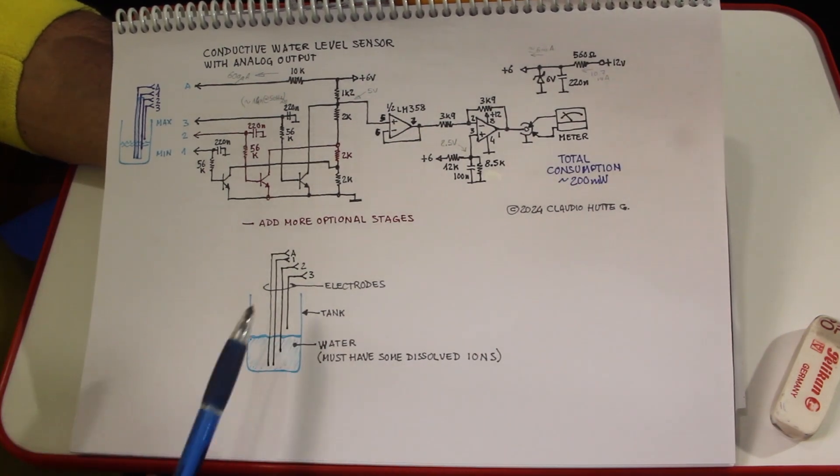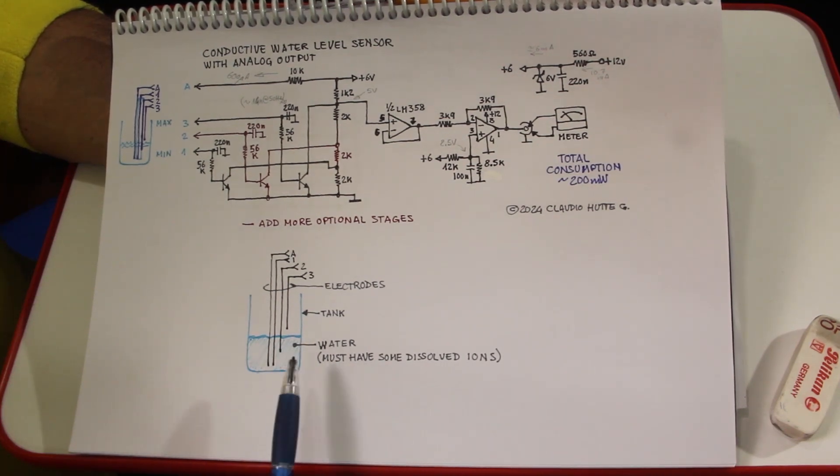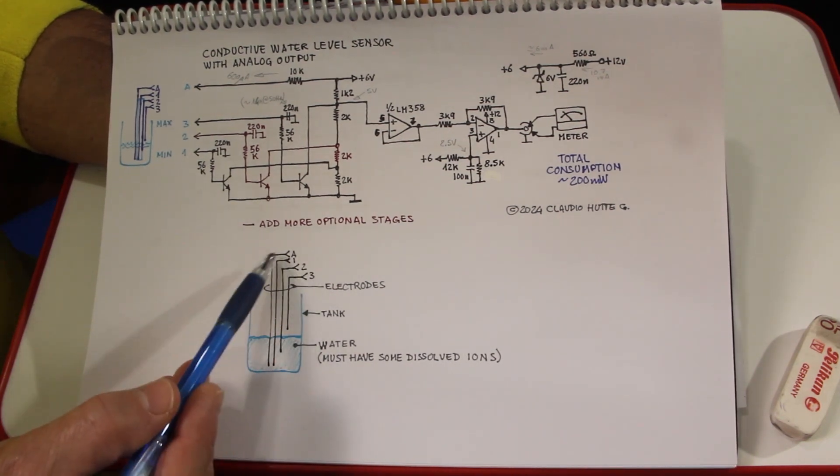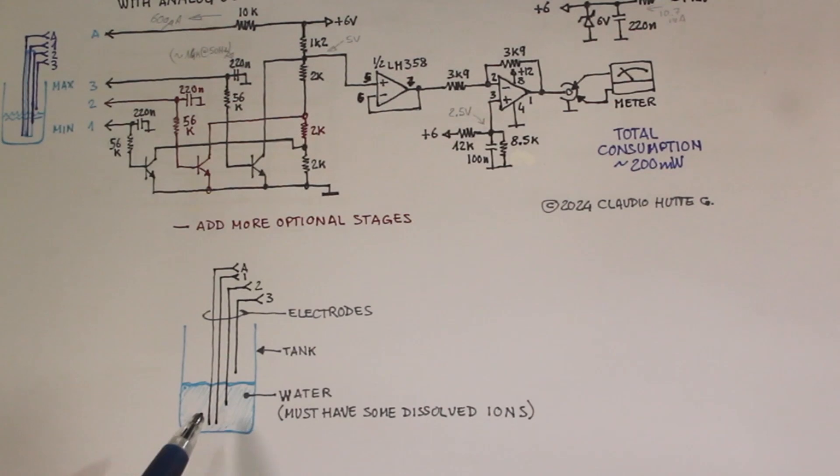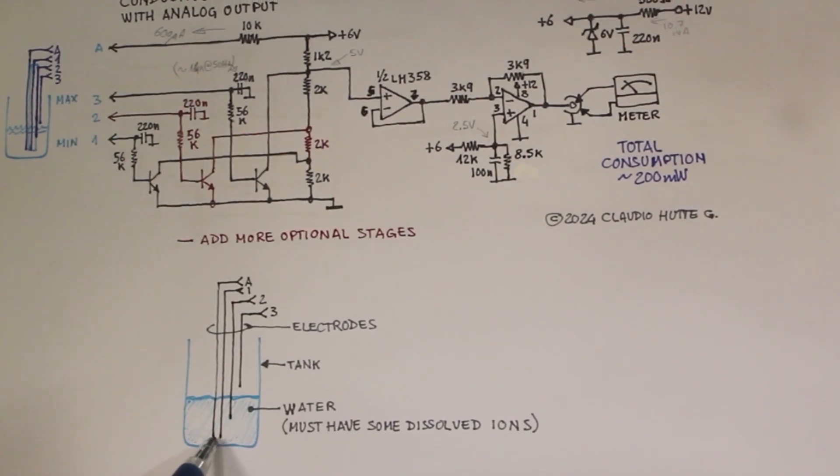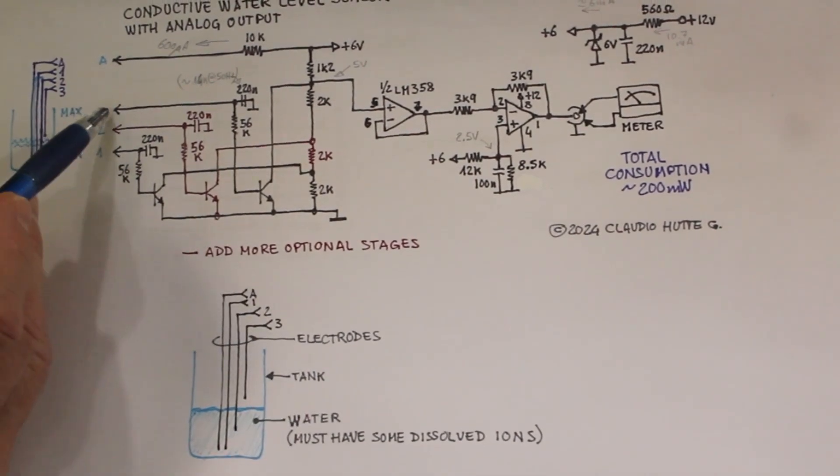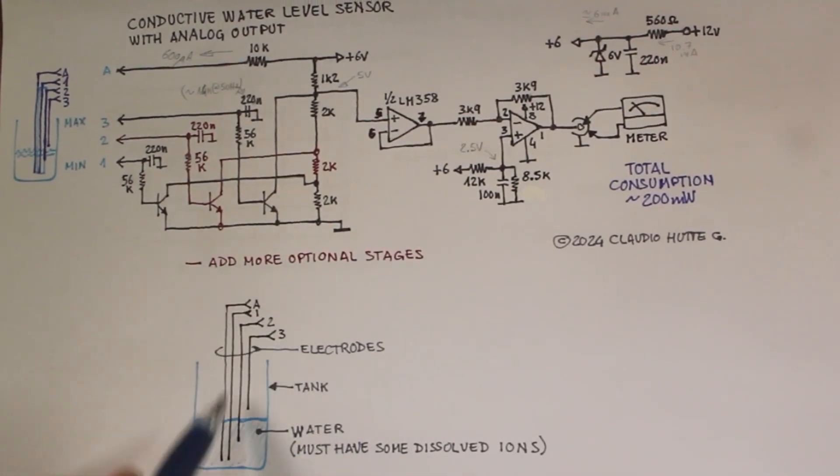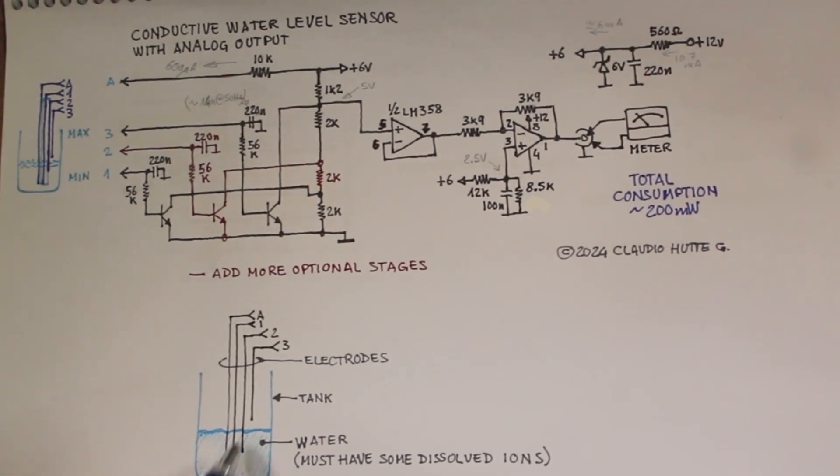So this is the first circuit. And here we have the tank, the tank with water. And water must have some dissolved ions in it, otherwise it won't work. Here we have the electrodes. A is this electrode, that is the common electrode. And then we have the number one that goes all the way down at the same level of the A electrode, the common electrode. And then we have the number three that goes all the way up at the highest level. And in the middle we have the number two or more electrodes at several intermediate levels, if you want, adding more stages like this one in red.